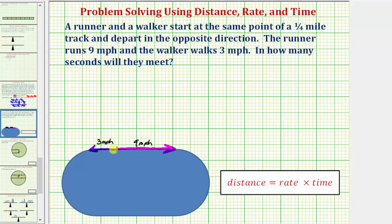Notice how they would be moving apart from each other at a combined rate of 12 miles per hour. And because they're on the track, they're also approaching each other at a rate of 12 miles per hour. And also notice how when they meet, they would have gone a combined distance of one-fourth of a mile.